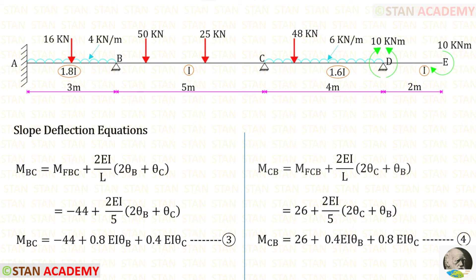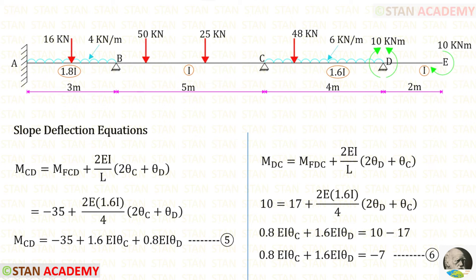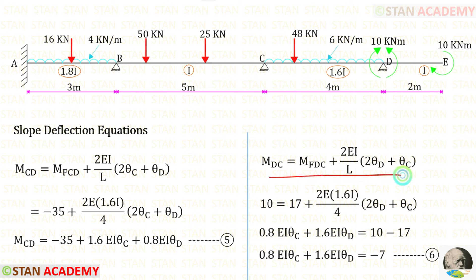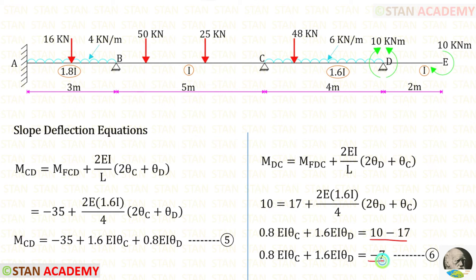Now let us make the slope deflection equations in span BC and span CD. First let us apply the fixed end moments. The length of CD is 4 and the moment of inertia is 1.6i, so instead of EI we apply 1.6i. Using this equation, let us make an equilibrium equation. We know the value of MDC is 10, so taking 17 to the other side gives minus 7. Thus in span CD we have made two equations.